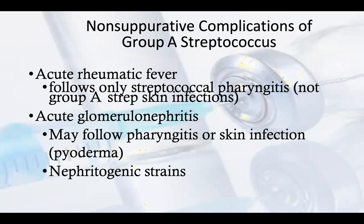Non-suppurative complications of Group A Streptococcus include acute rheumatic fever, which follows only streptococcal pharyngitis, not Group A Streptococcus skin infections. Acute glomerulonephritis may follow pharyngitis or skin infections from nephritogenic strains.